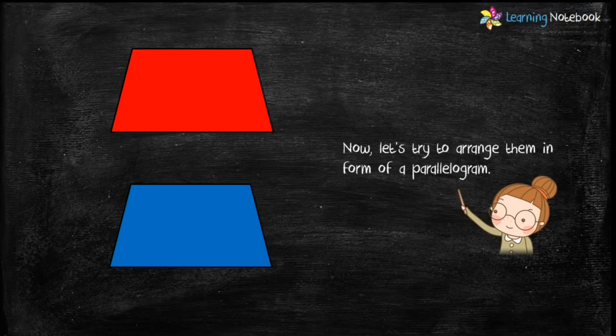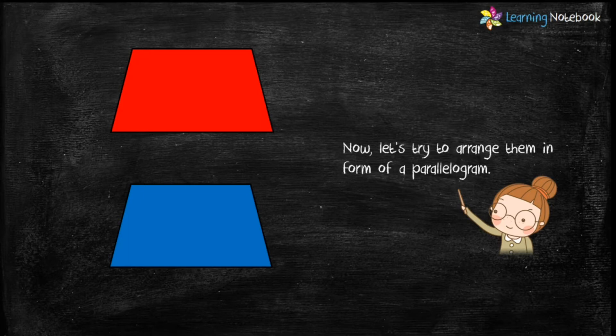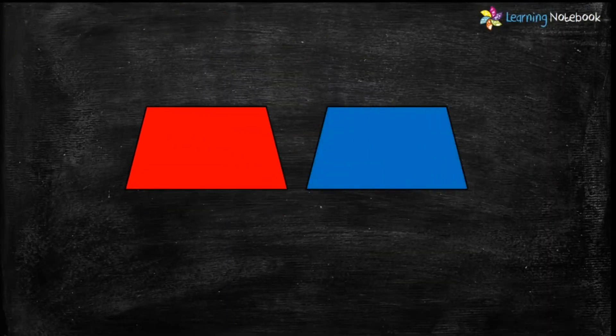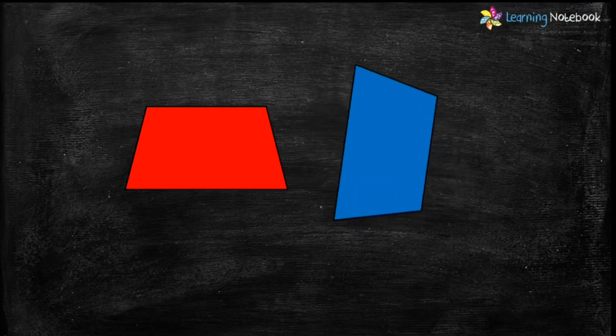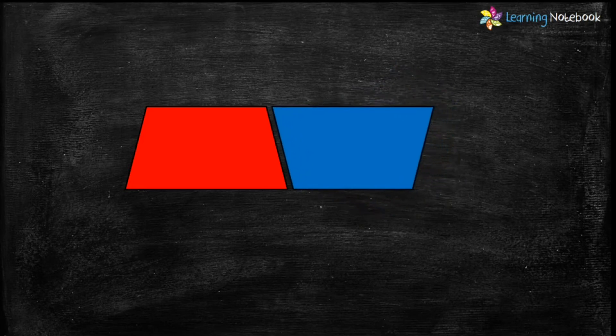Now let's try to arrange them in the form of a parallelogram. First, place the red trapezium. Then place the blue trapezium upside down just next to the red trapezium. If you notice, you would find that both trapeziums have formed a parallelogram.